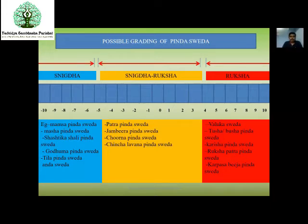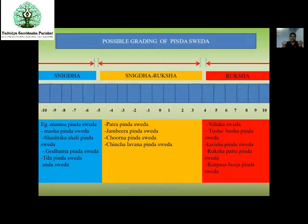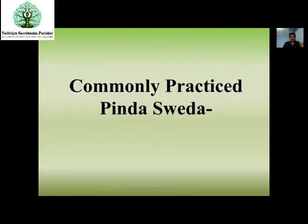The possible grading can be calculated as 0 to 4 and 0 to minus 4. Snigdha is mild, moderate is in between, and severe is when extreme heat is required — adopt Ruksha Sveda. For an intermediate level, adopt Snigdha Ruksha, and for minimal temperature, adopt Snigdha Pinda Sveda.